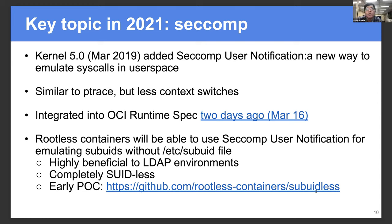So for ptrace, you have to inject hooks for every syscall, even for syscalls you are not interested in. But with seccomp user notification, you can only inject hooks into the interesting syscalls. So the number of context switches is proportional to the number of syscalls you want to emulate in user space. You still get the overhead of going back between kernel space and user space, but I guess that's not as bad. I don't have benchmark data.